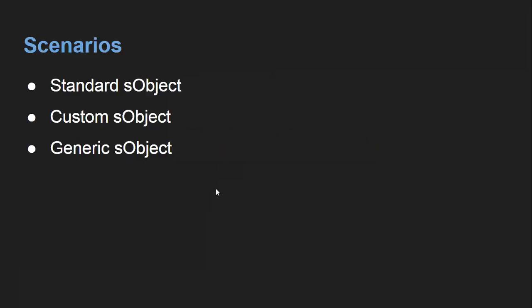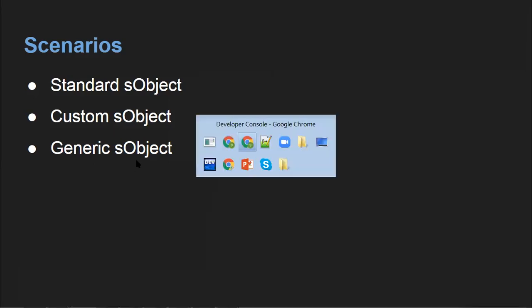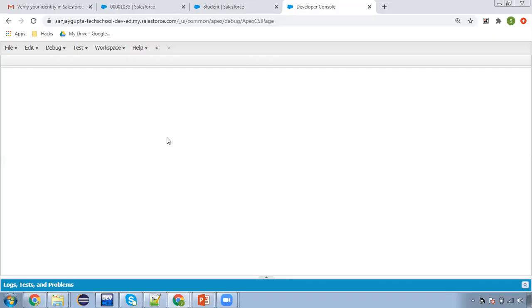So now there are three scenarios. First, we are going to create an SObject variable for a standard object, then for a custom object, and then a generic SObject variable. So let me open a developer console.